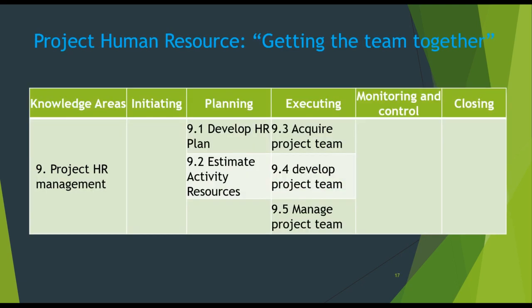Project human resource management is all about how the project manager runs the project team. Firstly, he has to understand what resources — people, equipment, facilities, funding — are required to complete the project, and then organize a team to execute the work involved. The processes are: develop HR plan, estimate activity resources, acquire resources, develop the team, manage the team, and control resources.